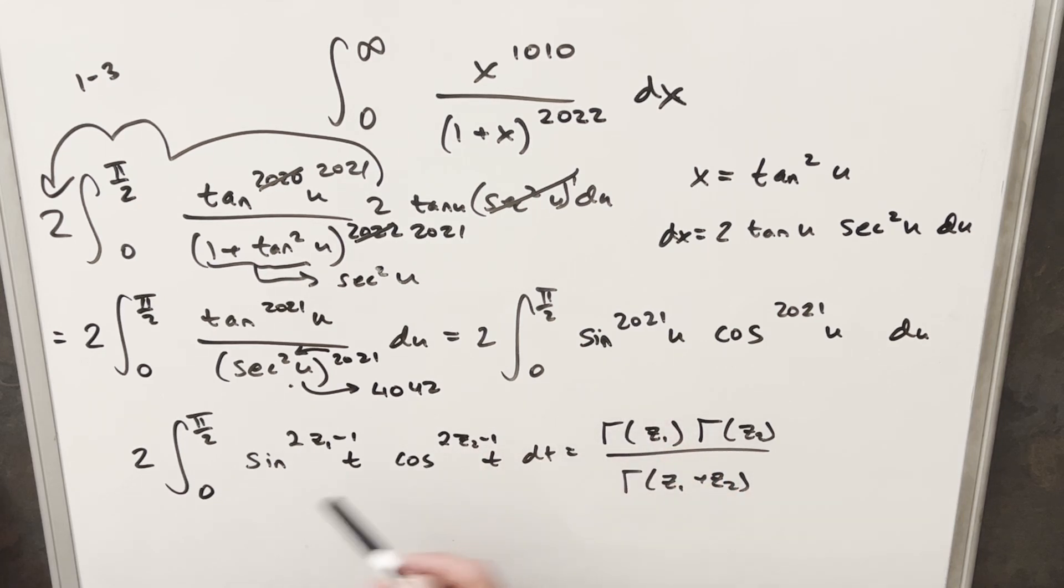Okay, so lining this up with the integral we have, we notice we have the two out front. We have the same bounds. And we just need this z1 and z2 value from this exponent. So that's going to be pretty easy to find. If we take this first one, it's actually going to be the same in both cases, right? Because we happen to have the same exponent. So if I look at two z1 minus one and set it equal to 2021, then if we solve for z1, we see that z1 is going to be equal to 1011. And so of course, we have the exact same value for z2, that's going to be 1011.